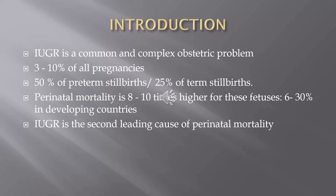Introduction to IUGR — intrauterine growth restriction. IUGR is a common and complex obstetric problem, constituting 8 to 10 percent of all pregnancies. It constitutes 50 percent of preterm stillbirths and 25 percent of term stillbirths. Perinatal mortality is 8 to 10 times higher for these fetuses, and it is 6 to 30 percent as high in developing countries. IUGR is the second leading cause of perinatal mortality after preterm delivery.